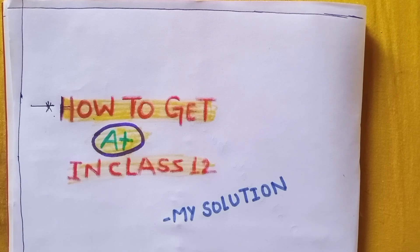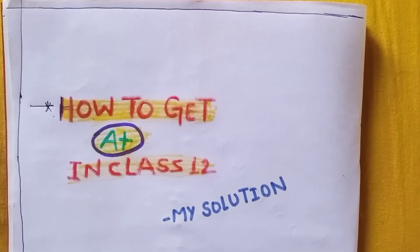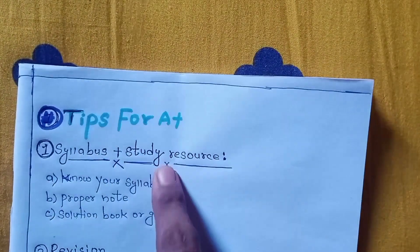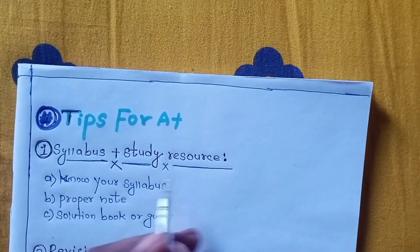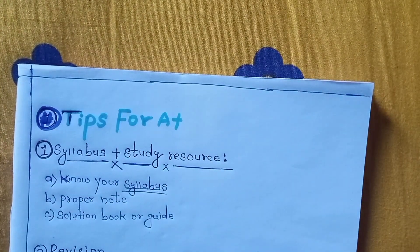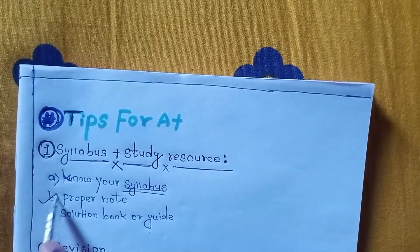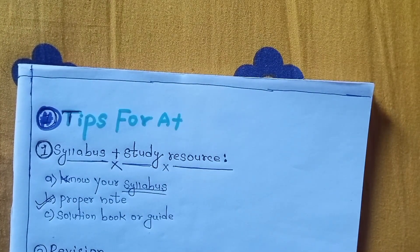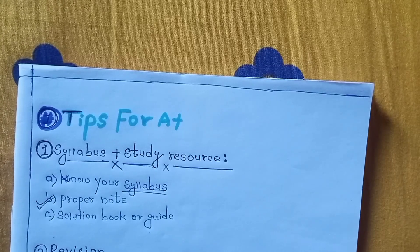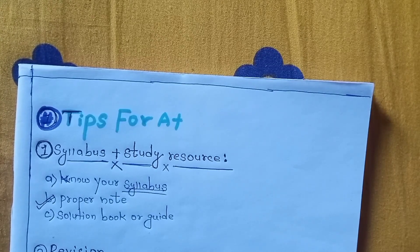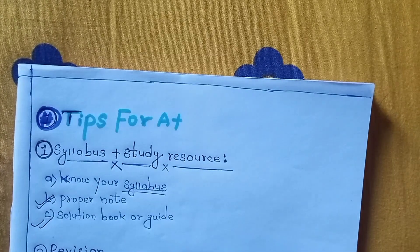If you want to get A plus, you can get A plus. This is the video. Let's discuss. Tip number one: keep up your class notes and study resources. You can keep proper notes. Make notes that you try to recall. Or you can keep one website and keep up proper notes. You can also keep a solution book or guide.